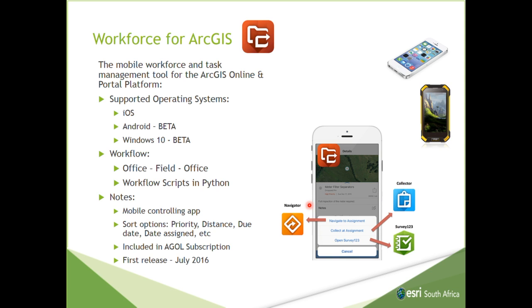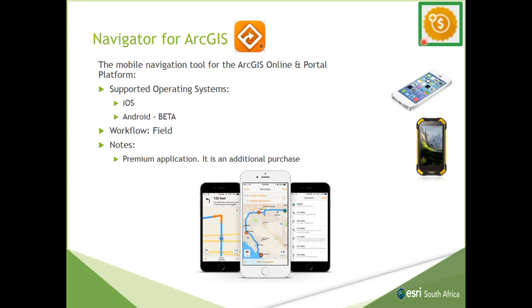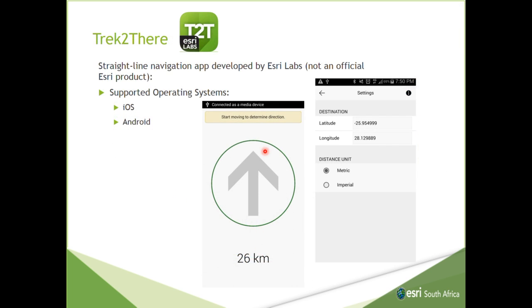I'm not going to go through Workforce too much because Albert did it last week — it had a proper interactive demonstration. As far as I know, it's still in beta on Android, but on iOS it's already been released. Then there's Navigator for ArcGIS, which I mentioned is a premium product. And then Track2There is a little app from Esri Labs that allows you to do straight-line navigation — it doesn't tell you to turn left or right, it just tells you to turn 10 degrees to the right to get to your destination. It basically just receives a lat and a long and uses your current GPS location to calculate what bearing to walk to reach that point.